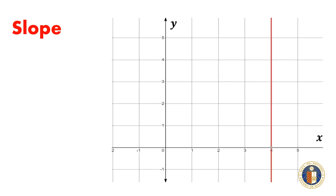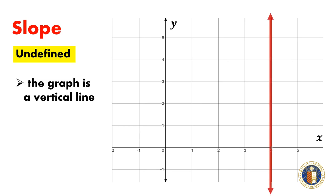If the slope of the line is undefined, the graph is a vertical line.